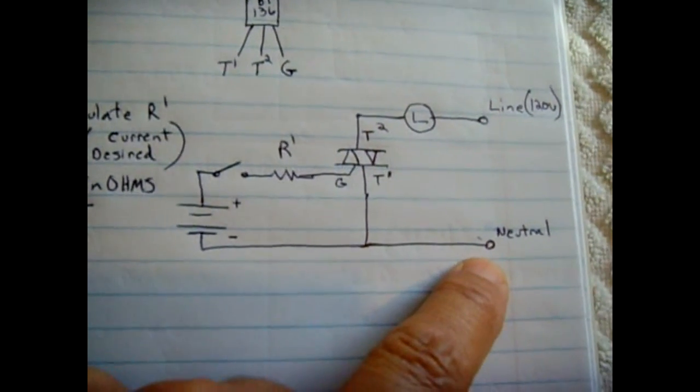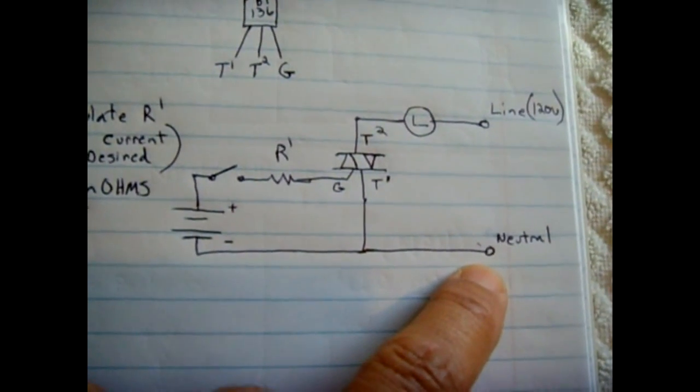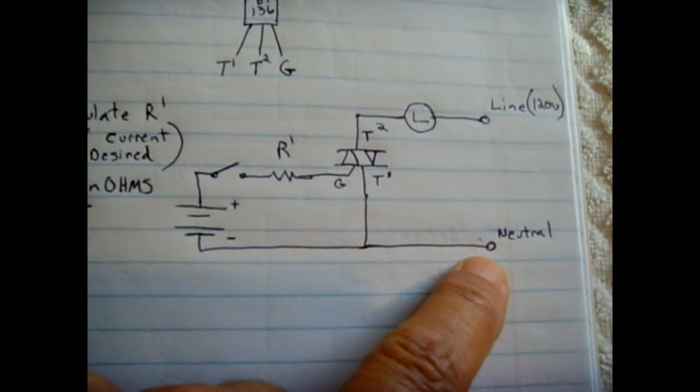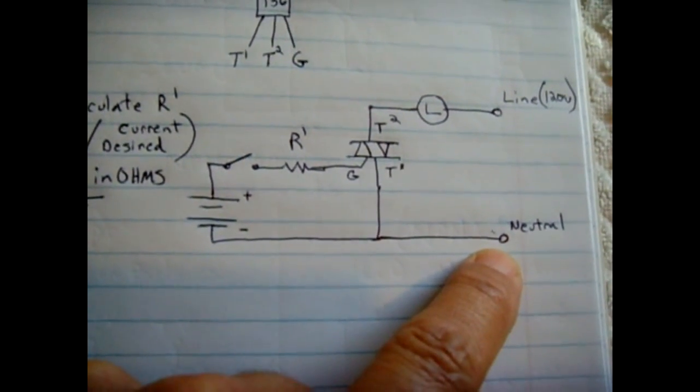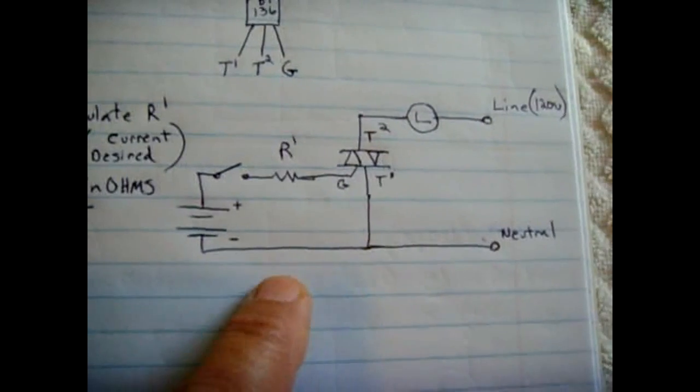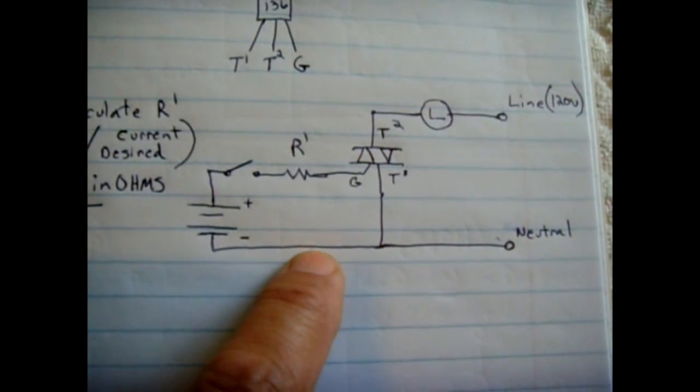You want to make sure negative to neutral and you verify it with your multitester, with your DMM in the electrical socket, to make sure whoever wired the receptacle did it correctly.